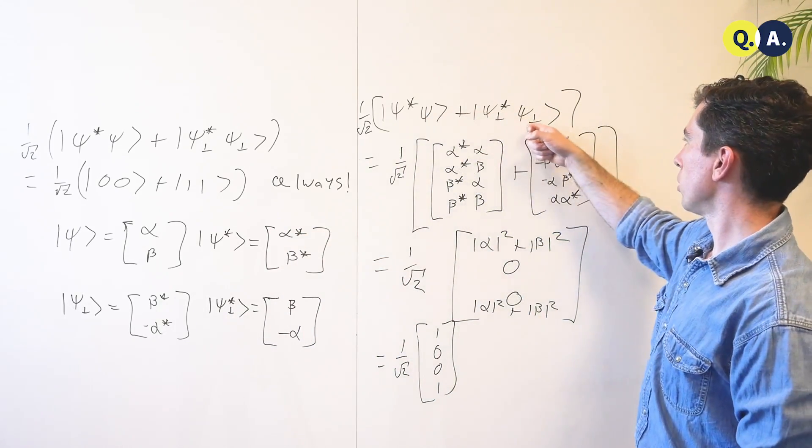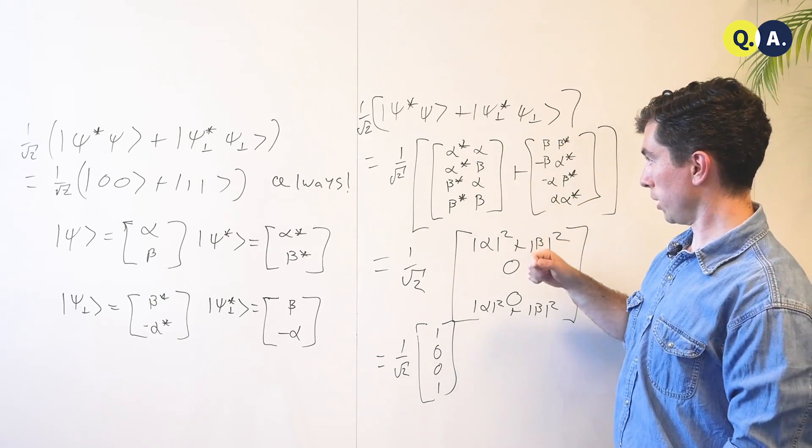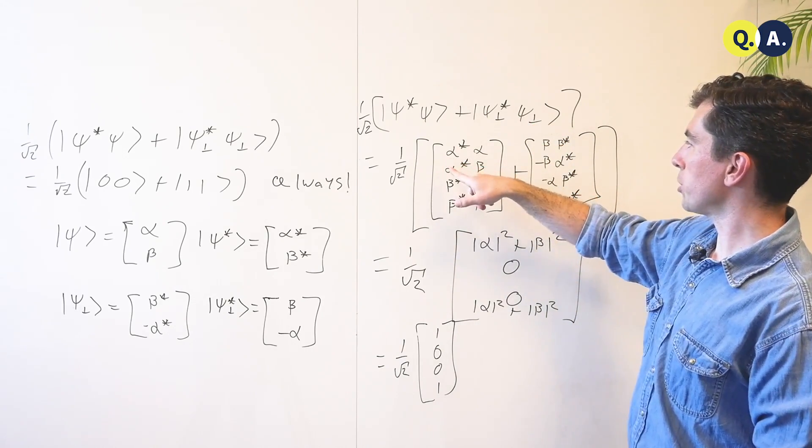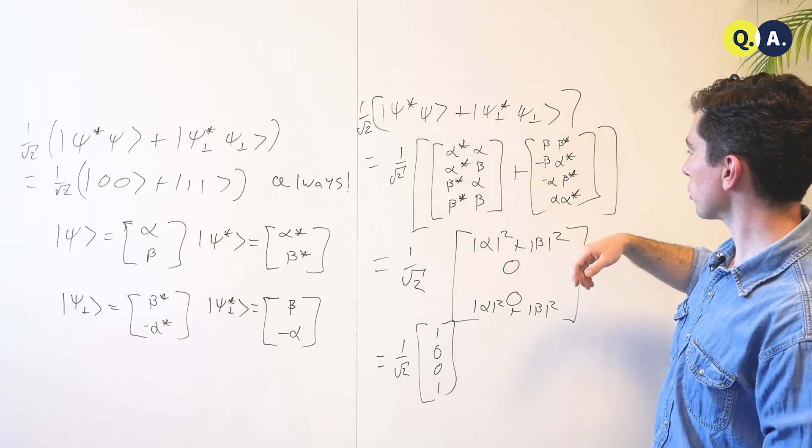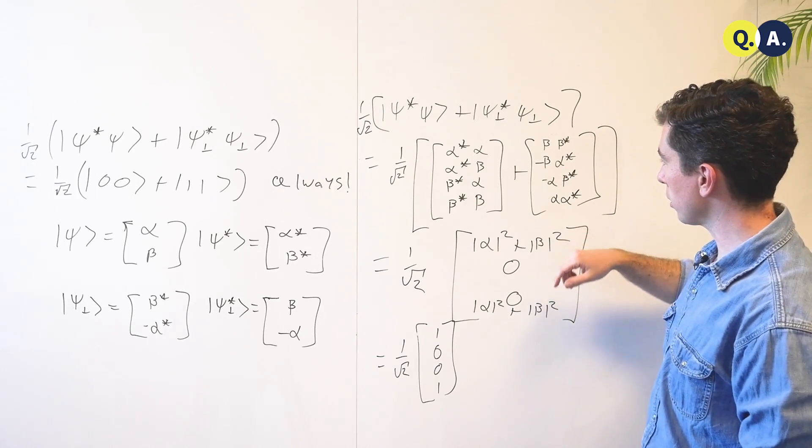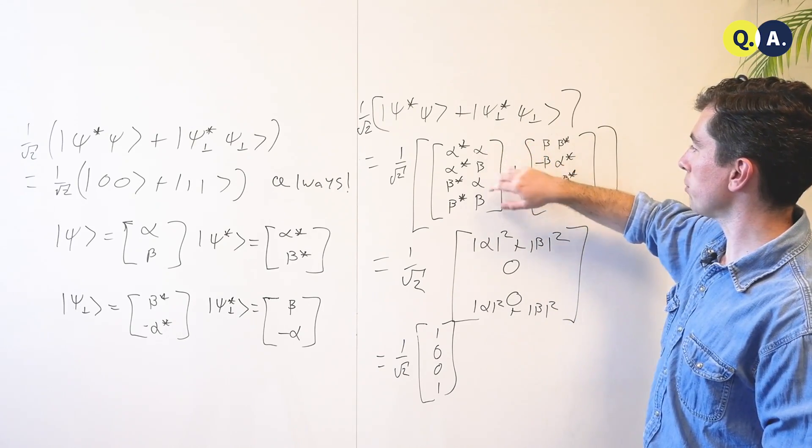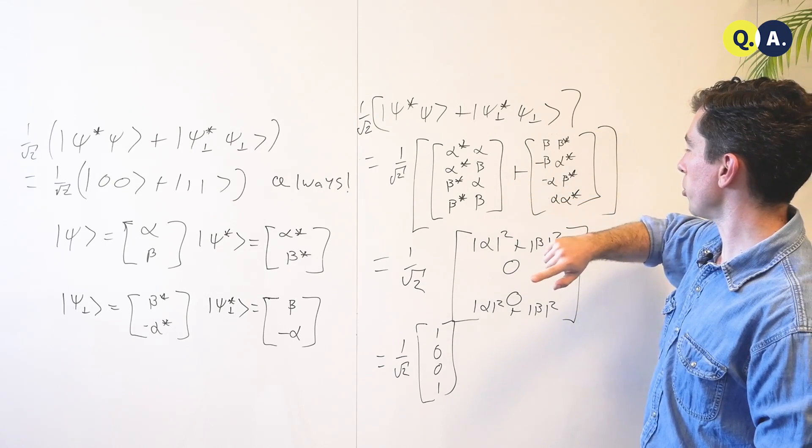And if we write out all of our tensor products using the formula that we learned earlier, we obtain a pair of densely packed vectors full of these coefficients, which would be very awkward in ket notation, but we have here alpha star alpha, alpha star beta, beta star alpha, and beta star beta.